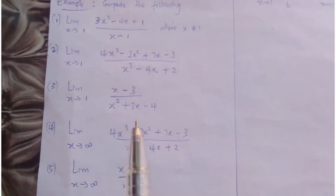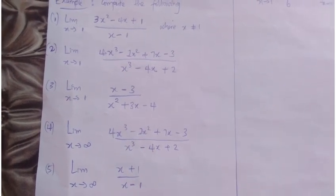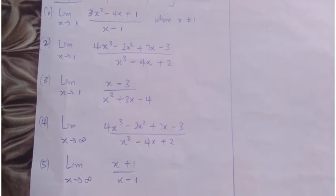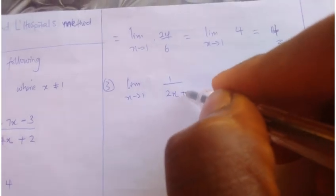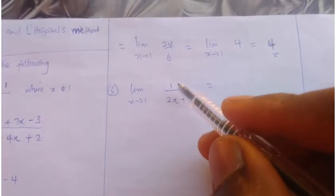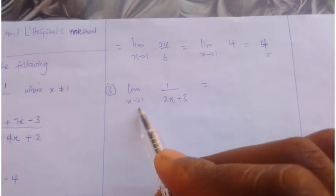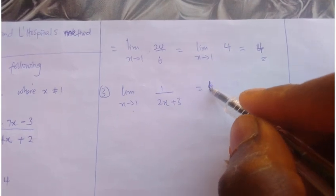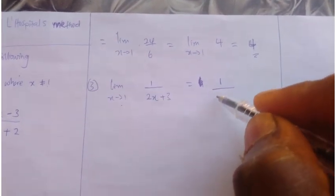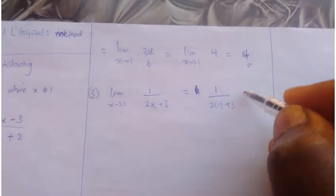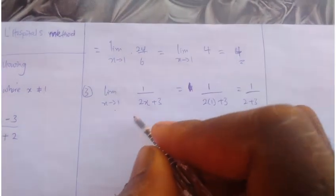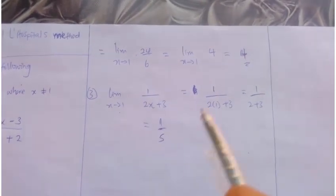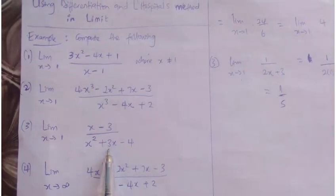Question 3 has (x - 3) over (x² + 3x - 4). Differentiating gives 1 over (2x + 3). So question 3 becomes: limit as x tends to 1 of 1 over (2x + 3). The numerator is already 1, so I can substitute x = 1: that gives 1 over (2 times 1 plus 3), which is 1 over (2 + 3) = 1 over 5.